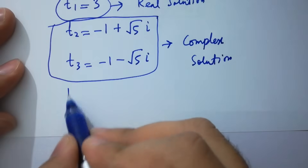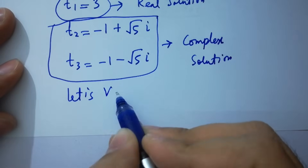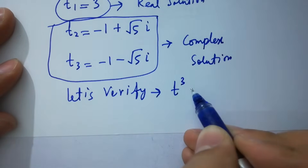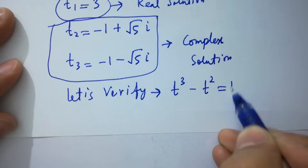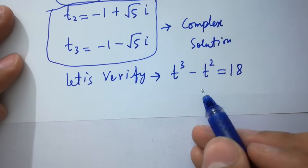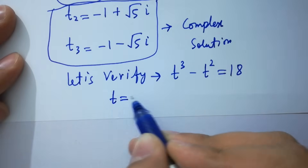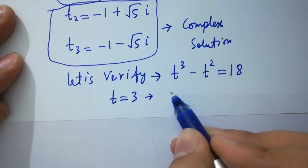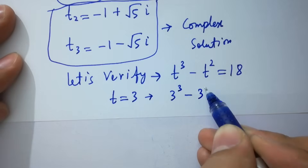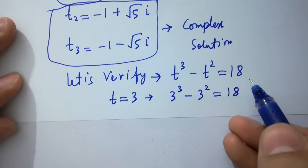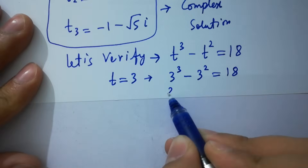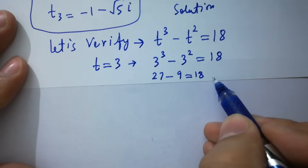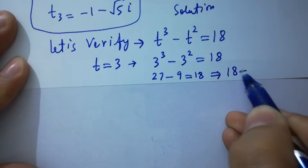Now let's verify: t³ - t² = 18. Putting t = 3: 3³ - 3² = 27 - 9 = 18. Left hand side equals right hand side. Verified.